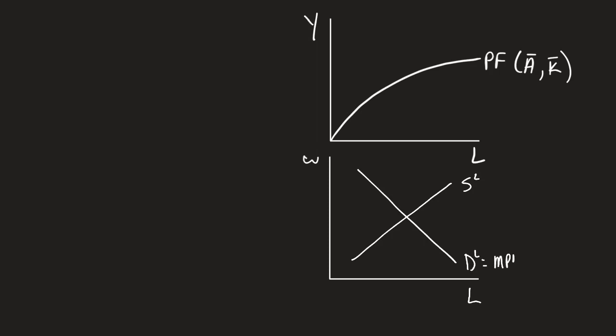which is also representing the overall MPL in this market. As a side, remember, it's the slope of the production function. So you can see that downward slope.